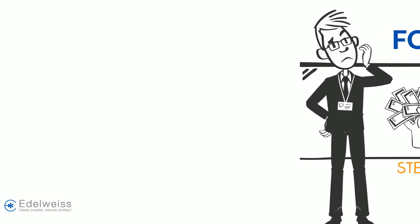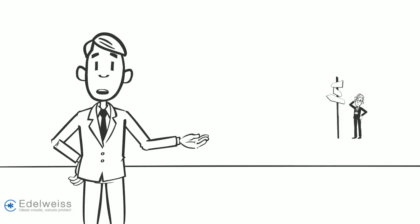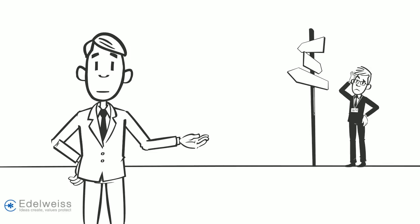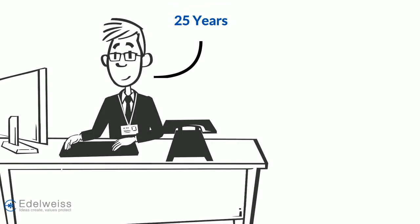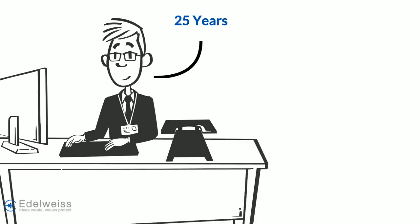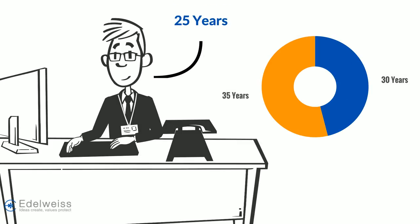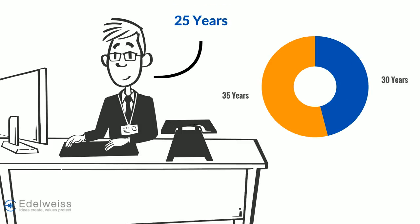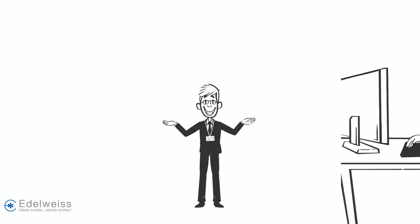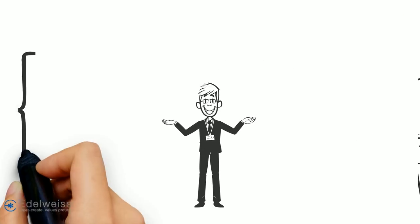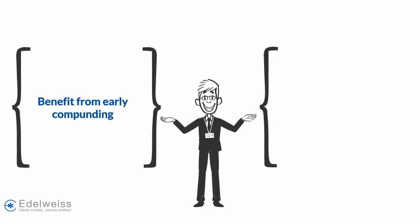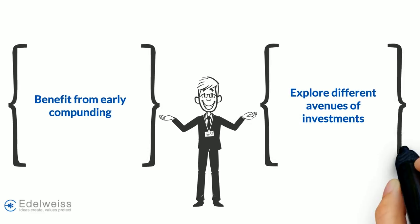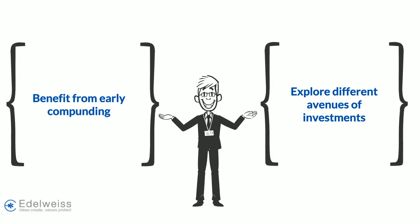So how do you make a strong investment plan? Step one is to analyze where you stand today. Say you start investing at 25 — then you nearly have a 30 to 35 year horizon before you stop working. This allows your investment to benefit from early compounding and provides you with the opportunity to explore different avenues of investment.